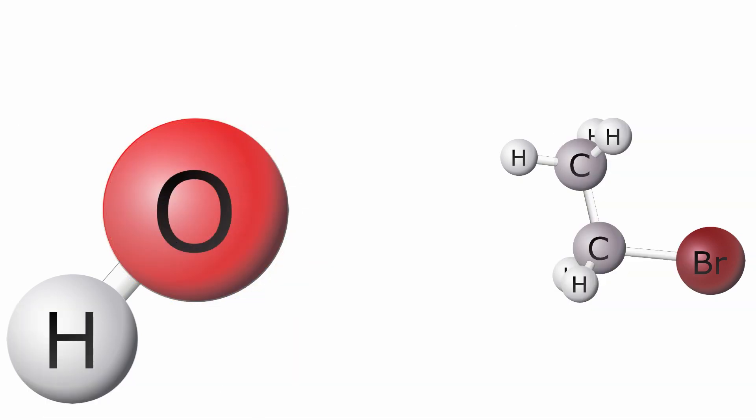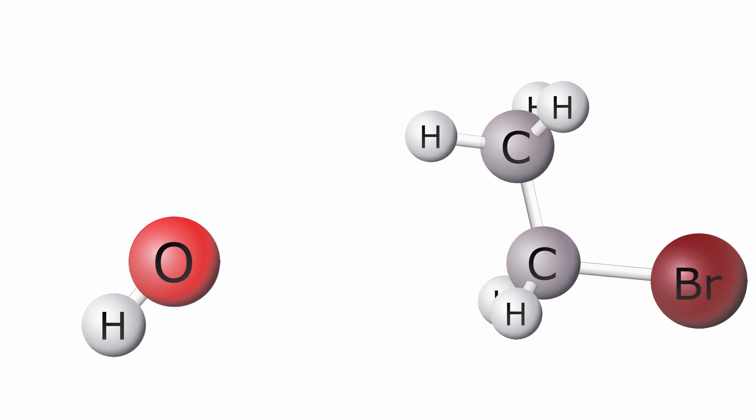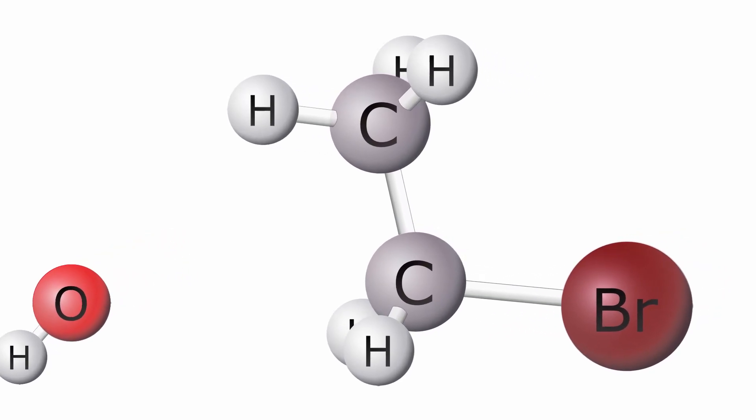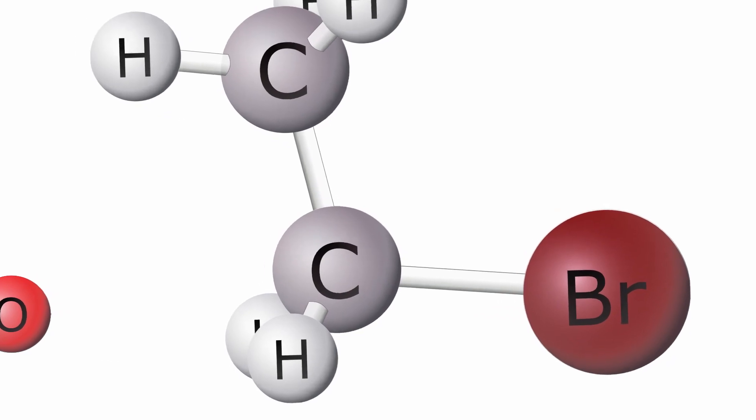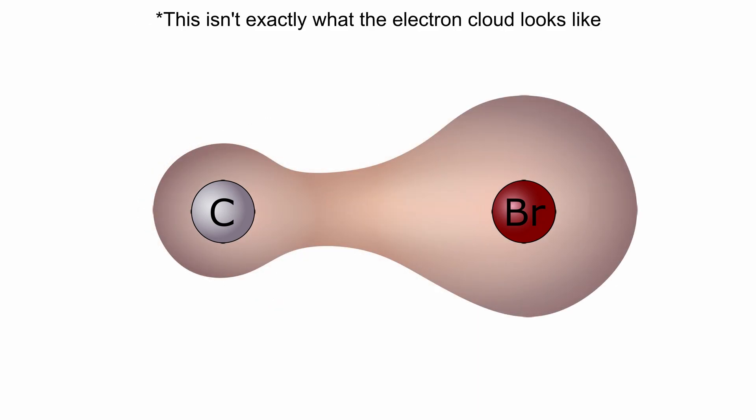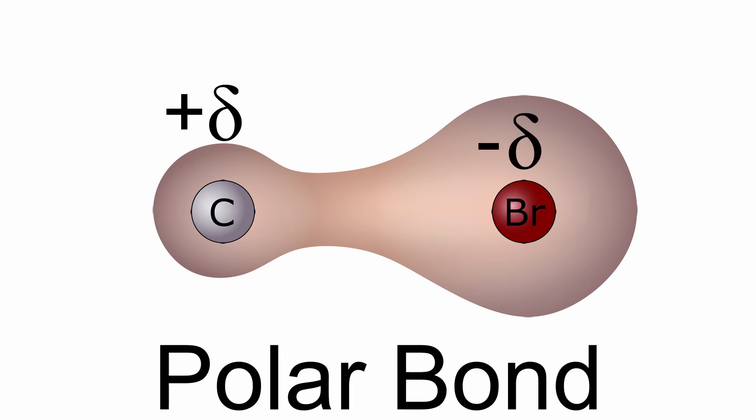But there's a problem. All of the atoms on the bromoethane have filled octets and don't really want to make any new bonds. So our oxygen atom has to get creative. Upon checking out our bromoethane molecule, hydroxide sees that one of the carbons is bonded to a bromine atom. Bromine is more electronegative than carbon, which means that it pulls the electrons in the bond it has with carbon towards it. This results in a slight negative charge on the bromine and a slight positive charge on the carbon.